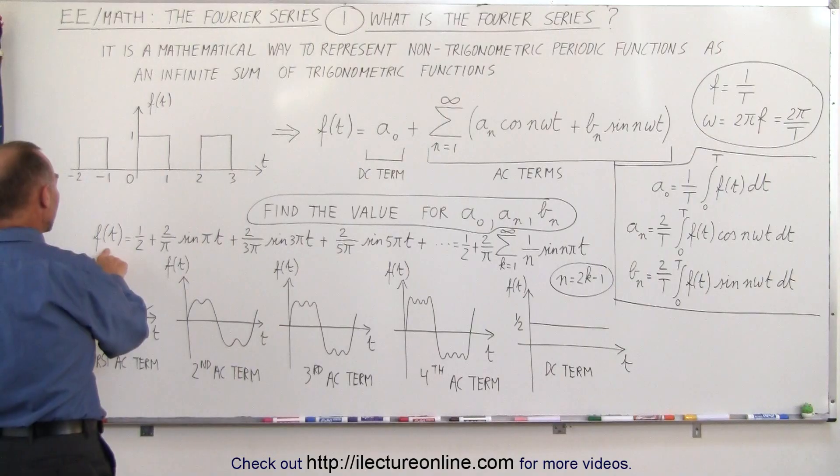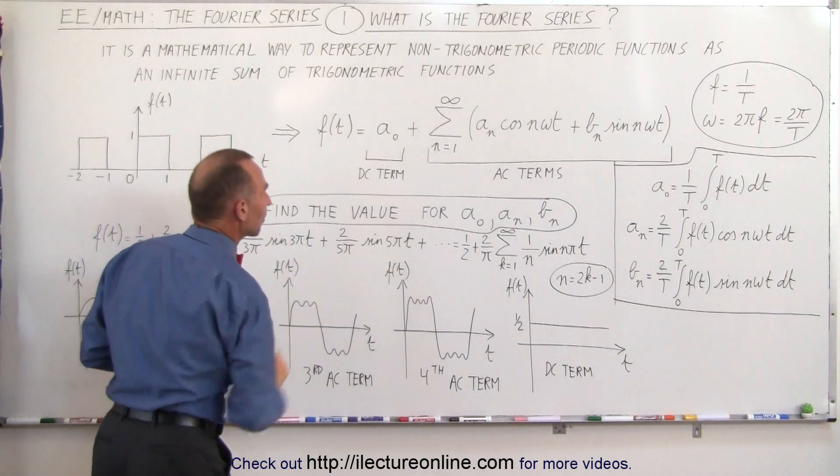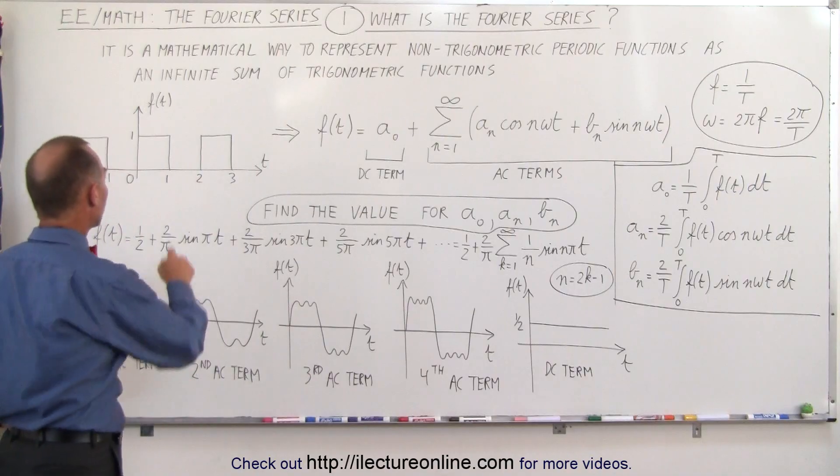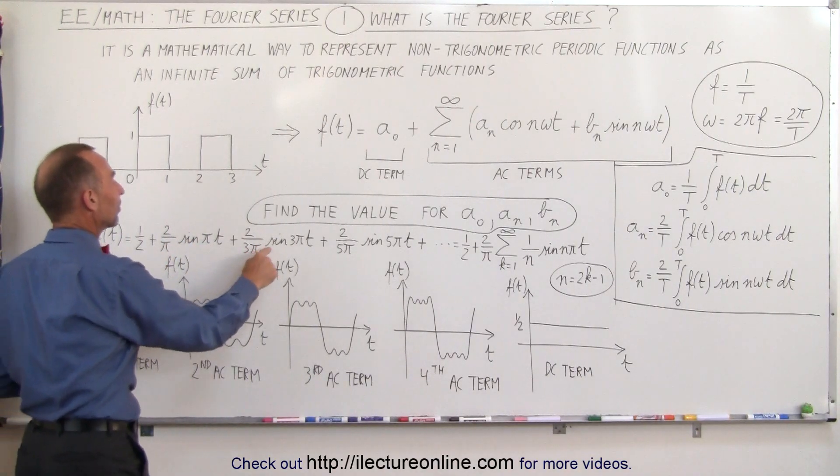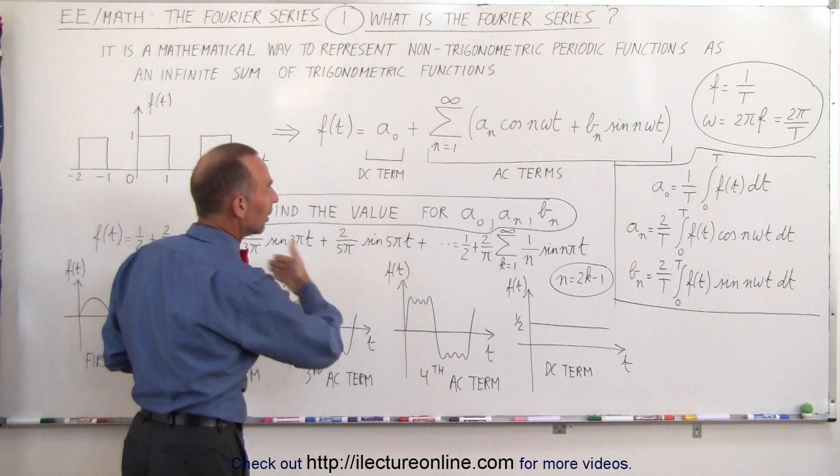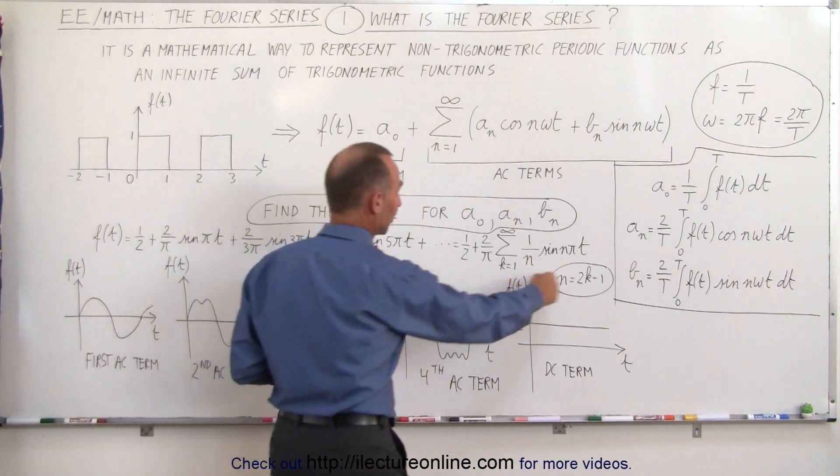This is the solution we're looking for, so the function as a function of time is equal to that constant term one-half plus an infinite sum of trigonometric functions, in this case the sine function. Notice it's two over pi times the sine of pi t, two over three pi times the sine of three pi t, two over five pi times the sine of five pi t and so forth, out to infinity.